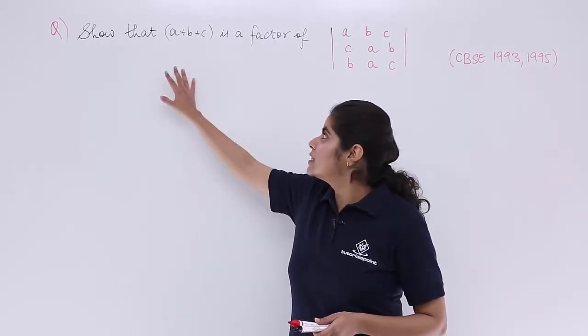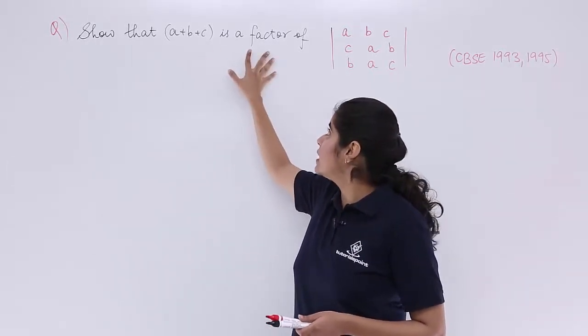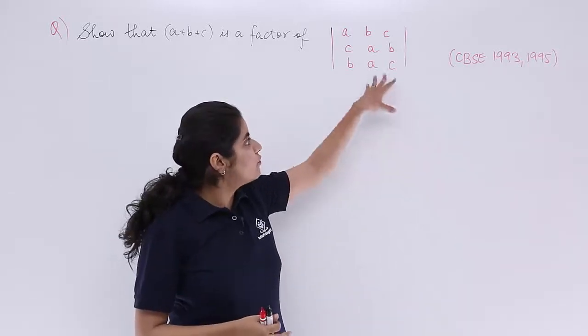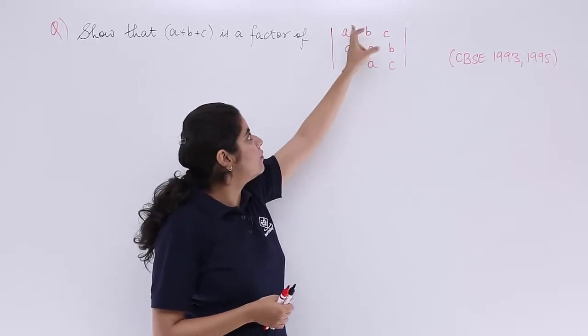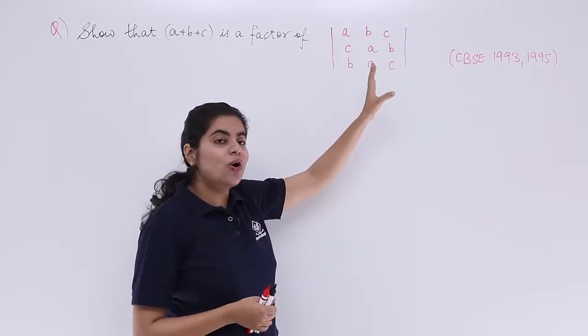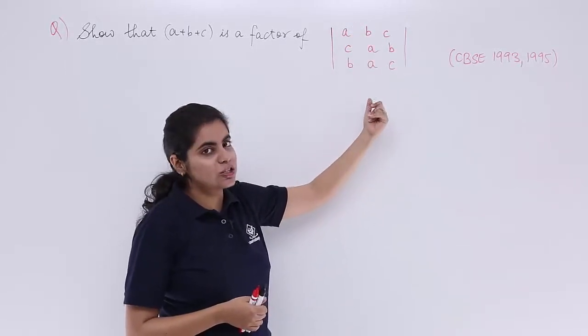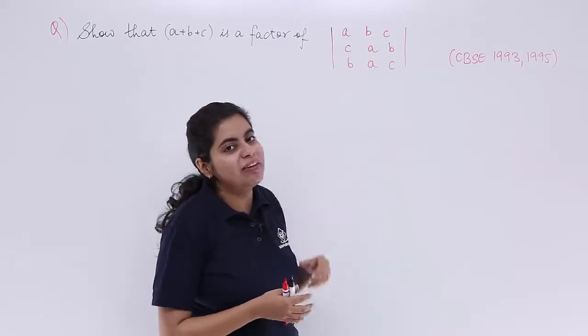Now let's see what the problem is. It says show that a plus b plus c is a factor of this determinant. If you observe this determinant closely, in the first row you have a, b, c, in the second row also you have a, b, c although the order is not same, and in the third row also you have a, b, c.